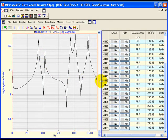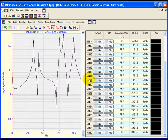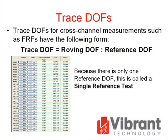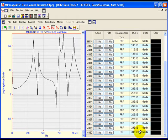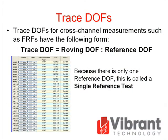Drag the vertical blue splitter bar to the left in the DataBlock window to display the trace properties spreadsheet. Trace DOFs for cross-channel measurements such as FRFs have the following form: Trace DOF equals roving DOF colon reference DOF. The roving DOF always precedes the colon and the reference DOF always follows the colon. Notice that all of the trace DOFs listed in the DOFs column of the traces spreadsheet contain the roving DOF of each measurement from 1Z to 30Z, followed by the same reference DOF behind the colon. Because there is only one reference DOF, this is called a single reference test. Single channel measurements only have a roving DOF and no reference DOF. Cross-channel measurements, like FRFs, will normally have both a roving DOF and a reference DOF.